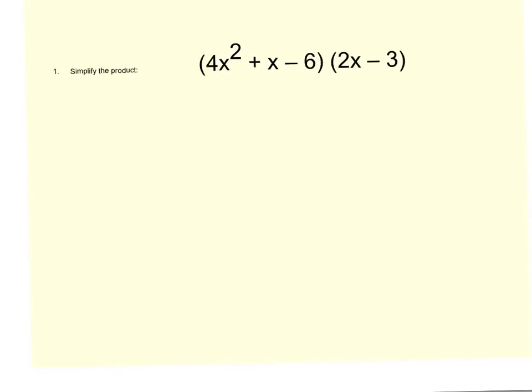This video is called Multiply a Binomial by a Trinomial. I've got a binomial here because there are two terms, and a trinomial here because I have three terms. The key is to make sure that everything in the first polynomial gets multiplied with everything in the second.